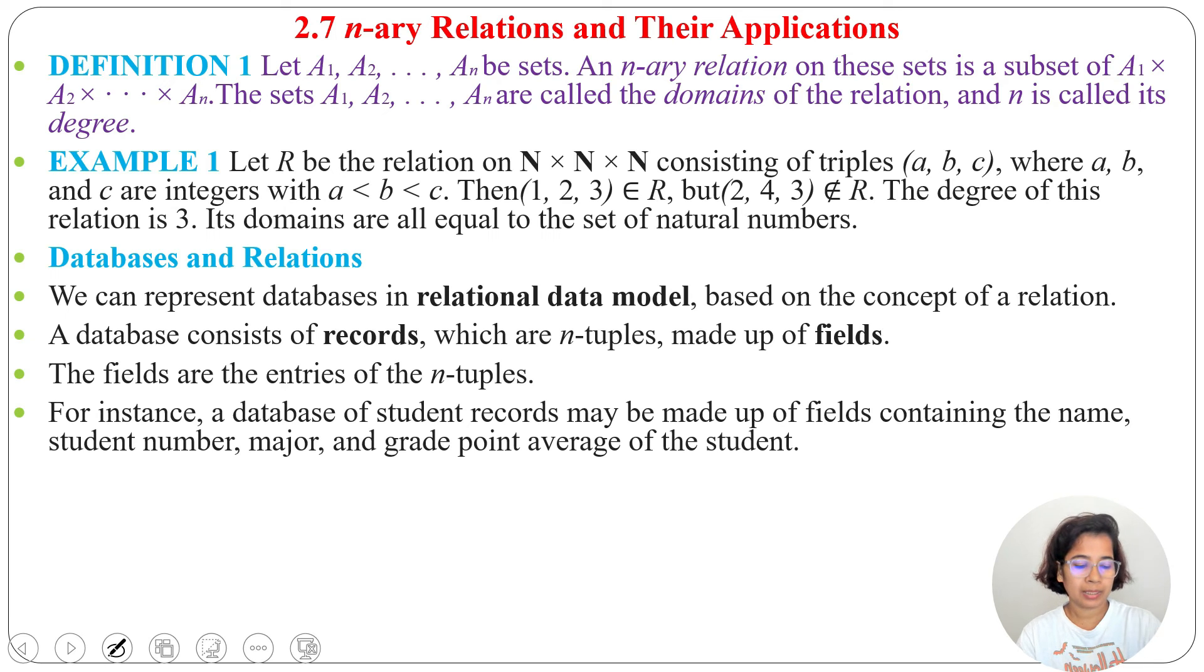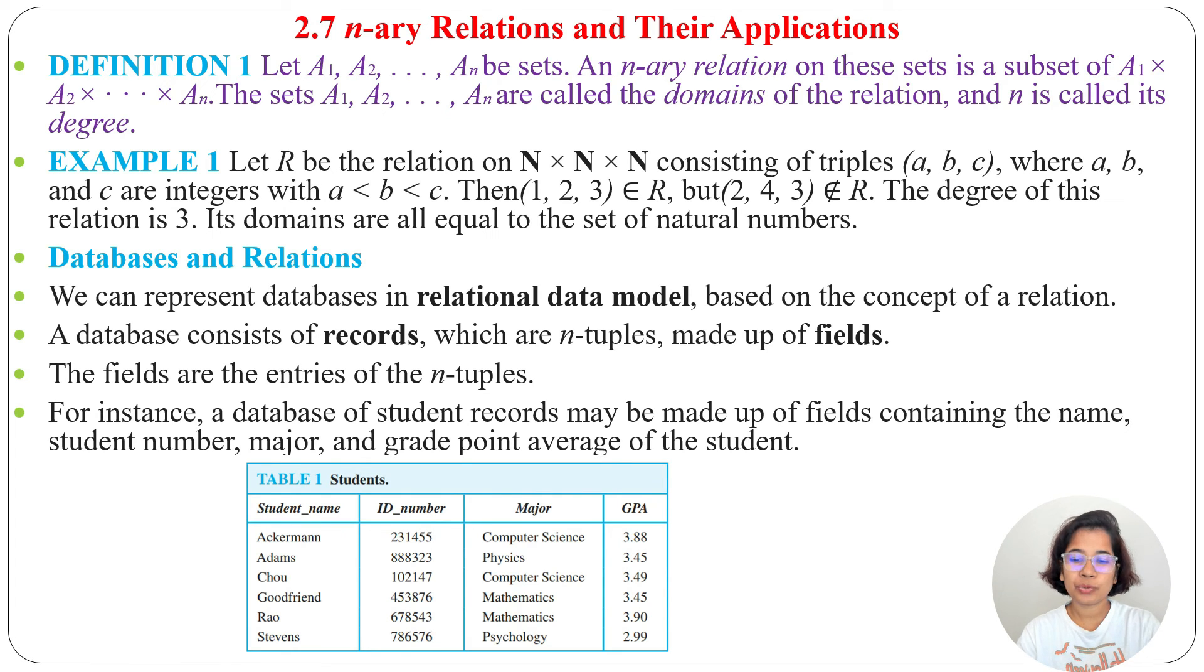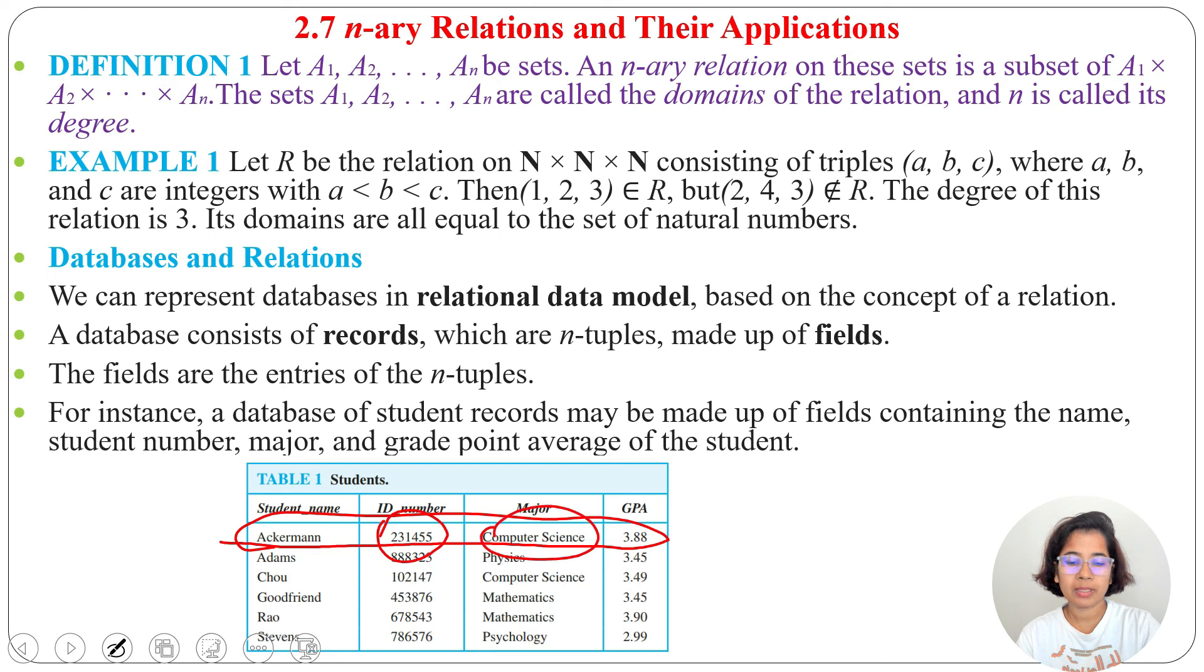Just see one example. This is a student database. Here, each individual row is a record, and that is made up of fields. Each individual box is a field.